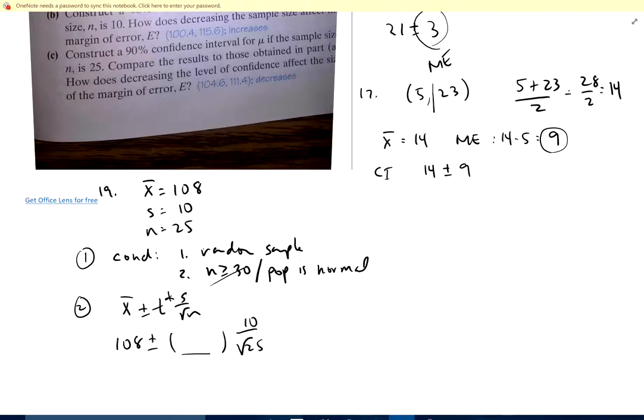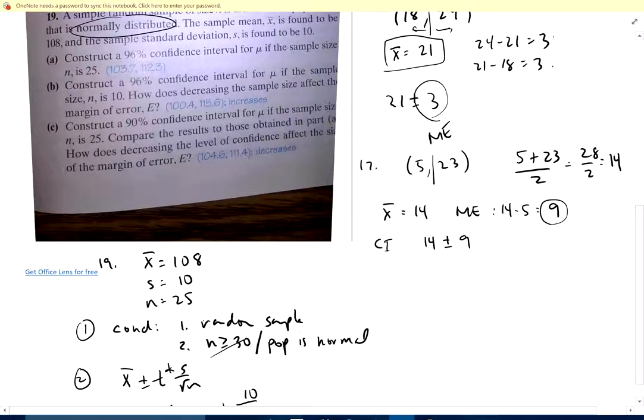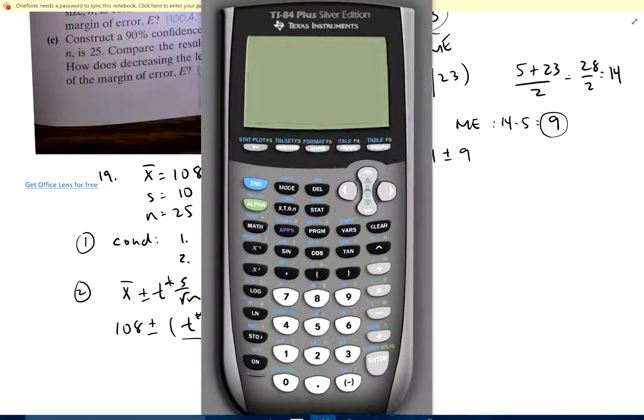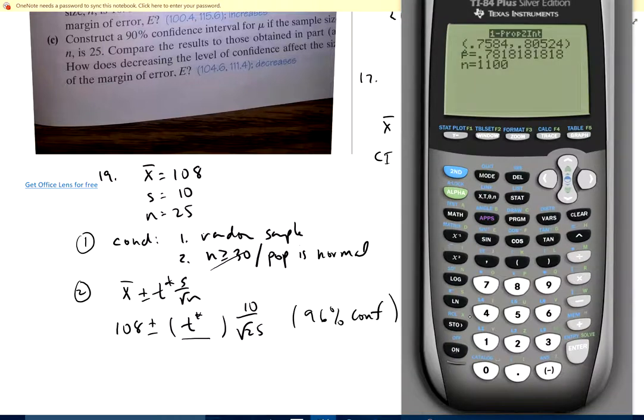I'm going to find that we want a 96% confidence interval. This is just T star for 96%. I don't know what that is because I don't have a 96% column in the back of my book. So I'm just going to let my calculator determine that. We'll do this one on the calculator and the rest I'll just do on the side.